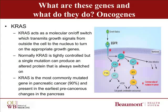KRAS is an oncogene which is like a molecular on-off switch, transmitting growth signals from the outside of the cell to the nucleus to turn on a set of appropriate genes. This process or pathway is called signal transduction. Normally KRAS is only turned on for a short time, otherwise the cell would be getting continual growth signals. However, a single mutation in the KRAS gene can produce a protein that does not respond to the turn-off signals and provides the cell with a constant growth signal. This is one of the earliest changes in pancreatic cancer.